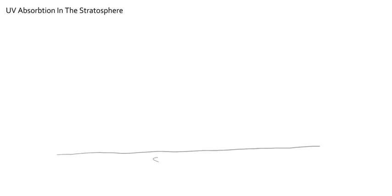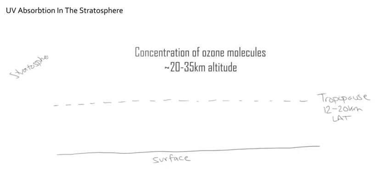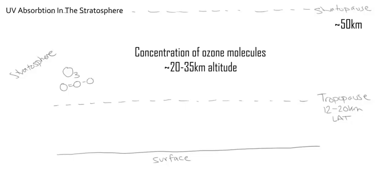Now let's draw a quick diagram. We have the surface of the Earth at the base, then the troposphere between 7 to 10 kilometers altitude — generally higher over the tropics and lower over the poles, averaging 12 to 20 km. Then we have the stratosphere, which is the focus of this video where the ozone layer is concentrated. There is some ozone in the troposphere, but the majority is between 20 and 35 kilometers in the stratosphere, and then we have the stratopause at about 50 kilometers, and above that the mesosphere.